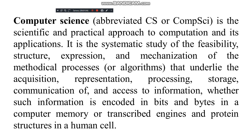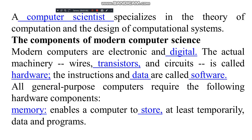Computer science is specialized in the study of computation and design of computational systems. The components of modern computers are electronic and digital. The actual machinery — wires, transistors, and circuits — is called hardware. The instructions and data are called software. All general-purpose computers require certain hardware components.